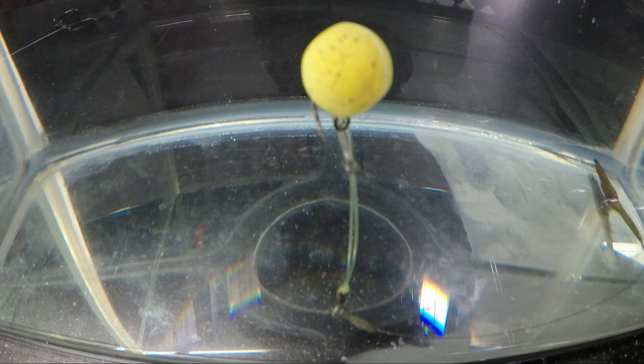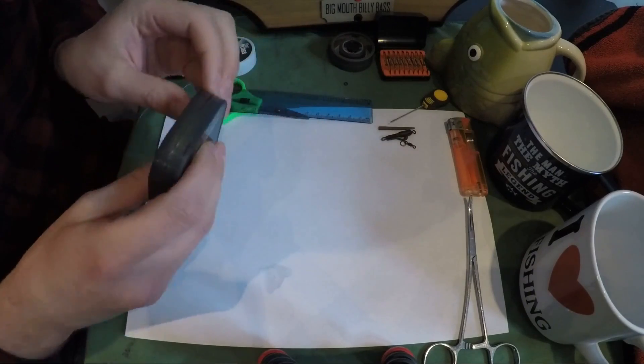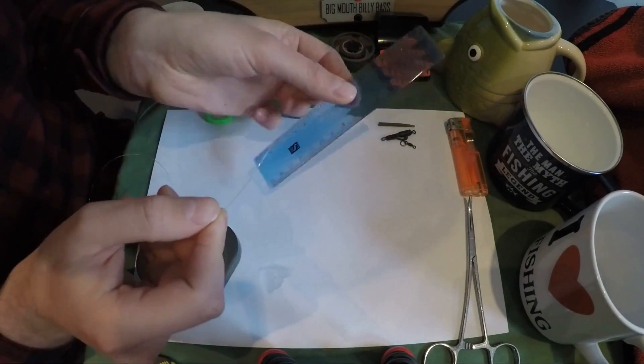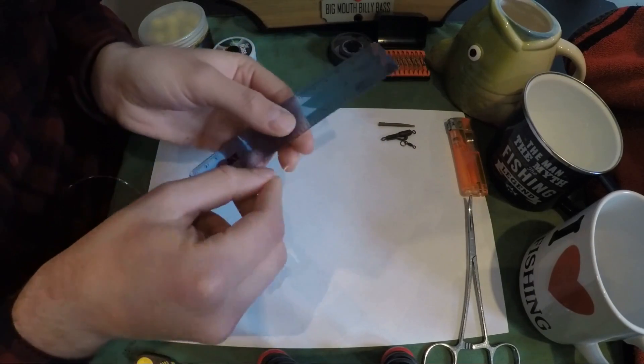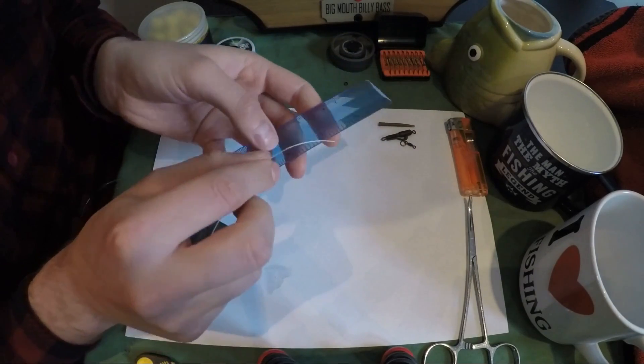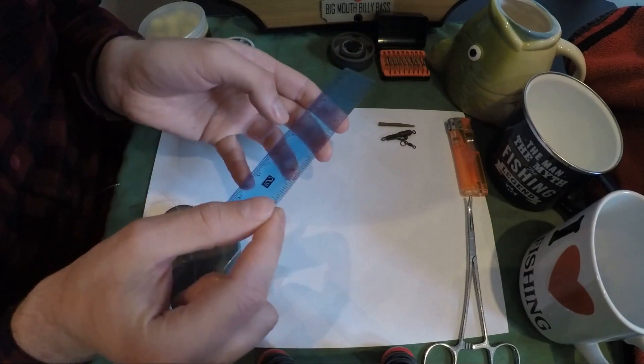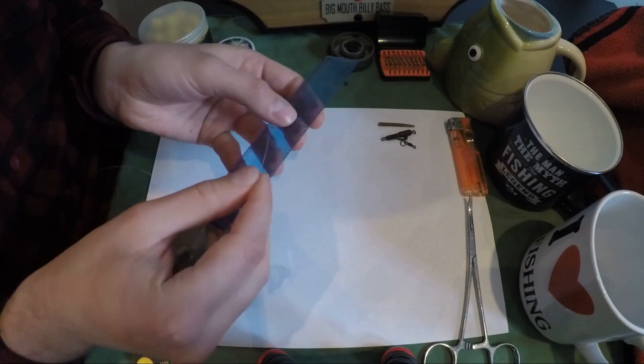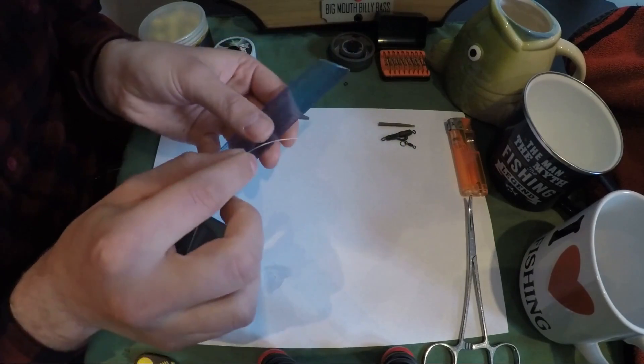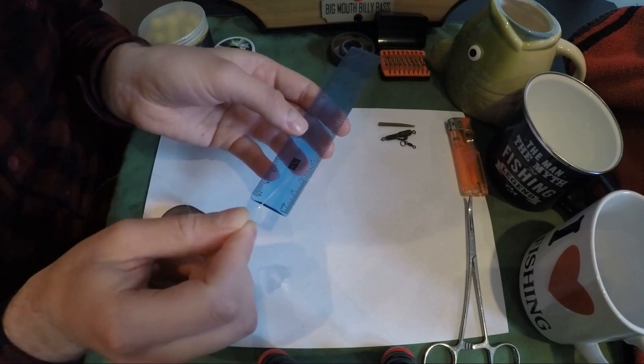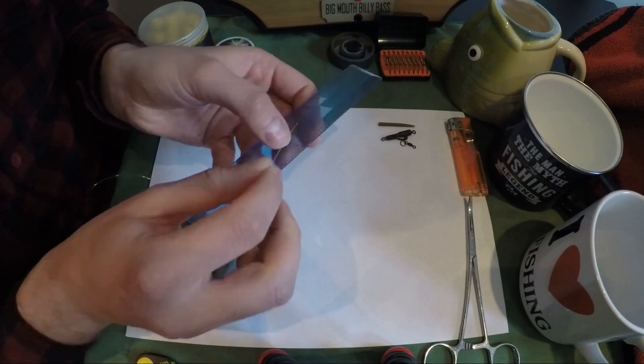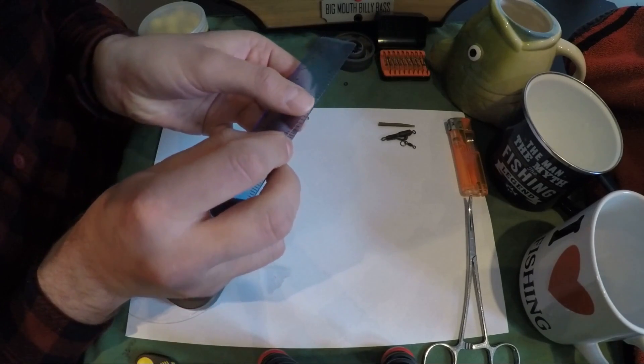To tie that, you need some chod rig material. I use a ruler not because I'm particularly fussy about the length of my rig, but because I'm fussy about how much material I use. I don't like to waste any of it. When you cut your tag ends off and I see inches of it lying there, I just see other rigs that I could have made. Maybe that's just me being a tight Yorkshireman.